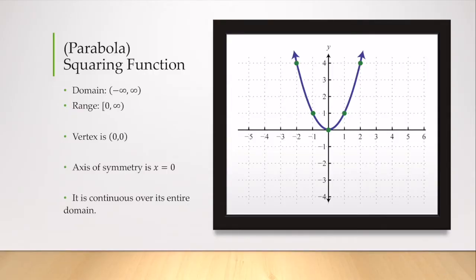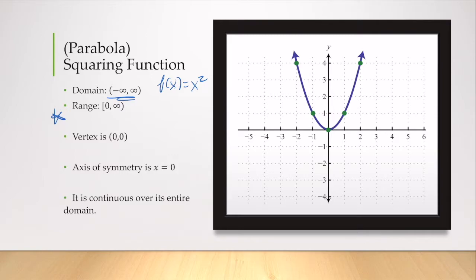A parabola is also known as a squaring function. Here's our most general squaring function: f of x equals x squared. Its domain is all real numbers, from negative infinity to positive infinity, and its range goes from zero to infinity. This range is what changes as we use vertical and horizontal shifts to move our graph around the coordinate plane. Our vertex is at zero, zero — that's where our graph switches from decreasing to increasing. Its axis of symmetry is the vertical line x equals zero, and it's continuous over its entire domain.